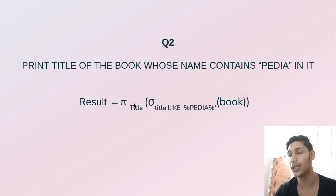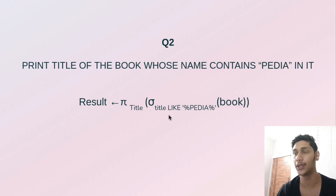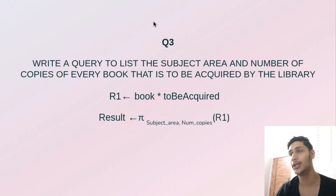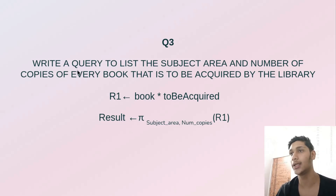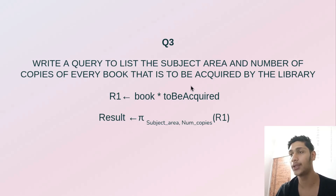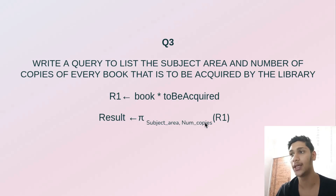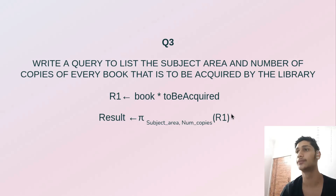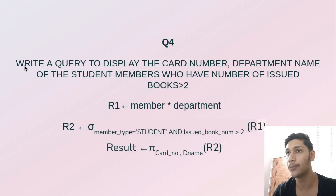In the third problem, write a query to list the subject area and number of copies of every book that is to be acquired by the library. We perform a natural join between book and to_be_acquired, and extract the subject area and number of copies from r1.